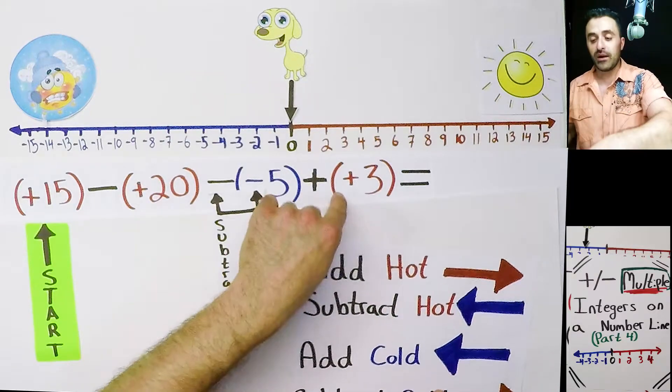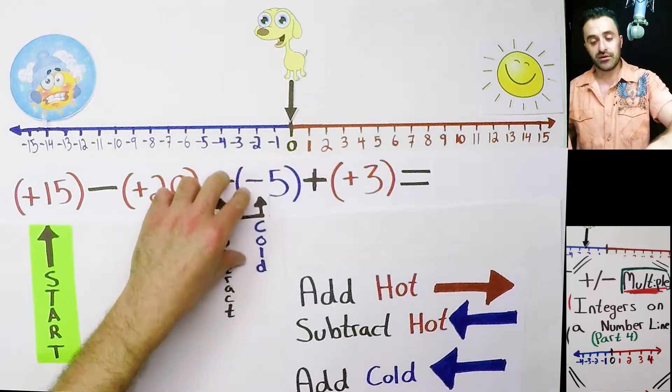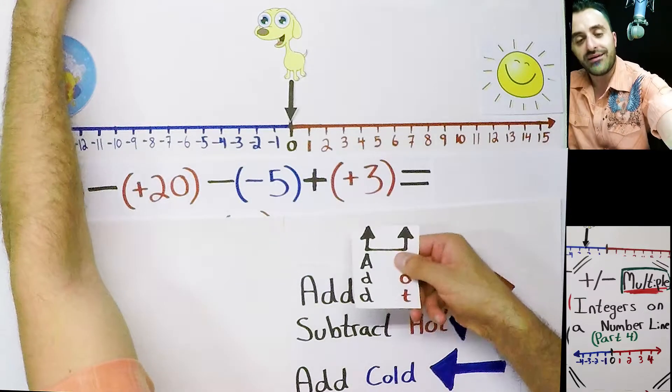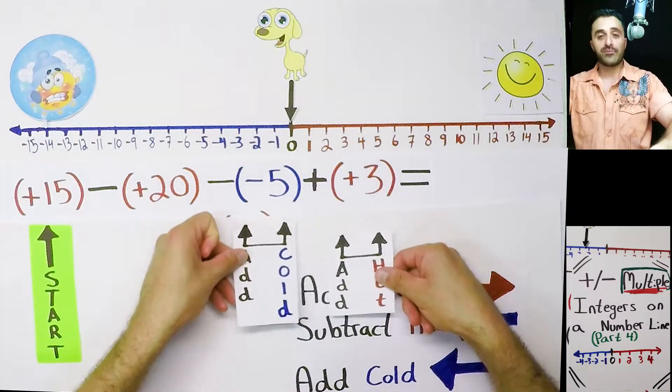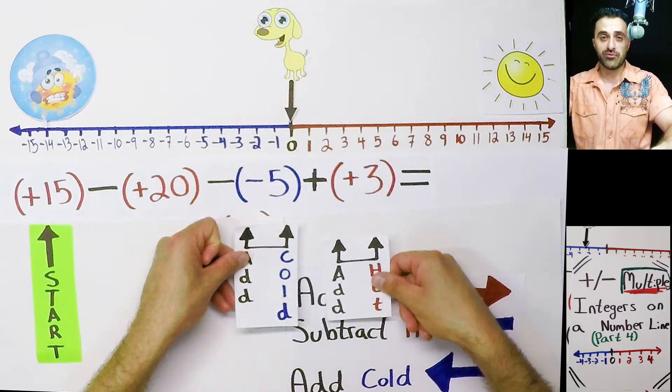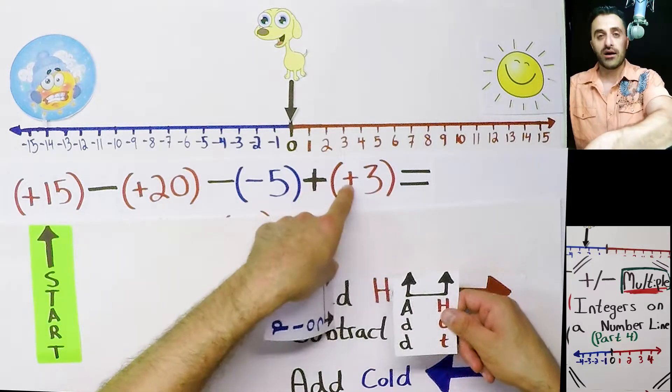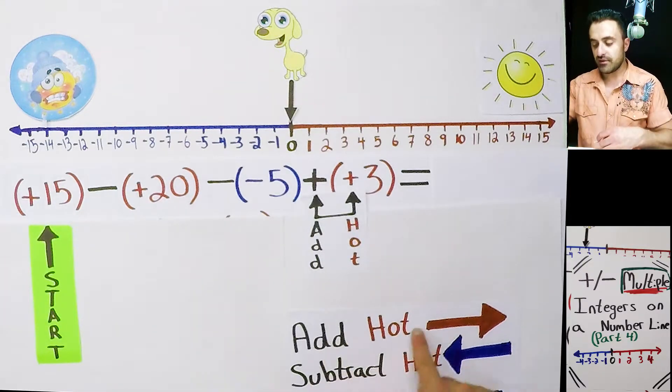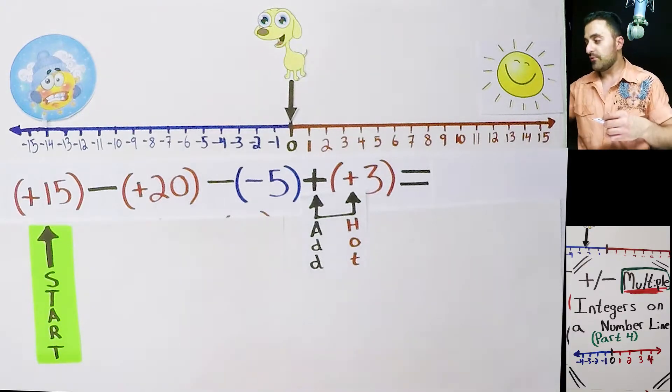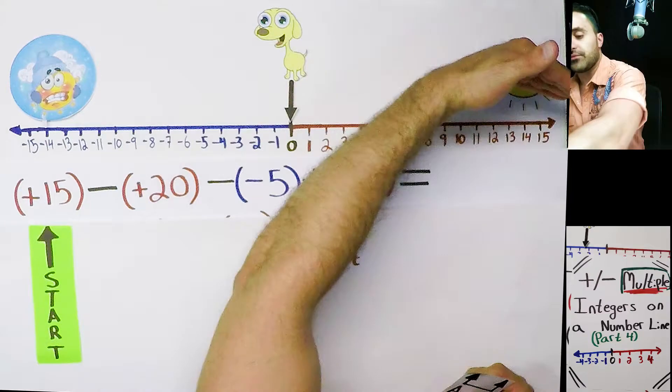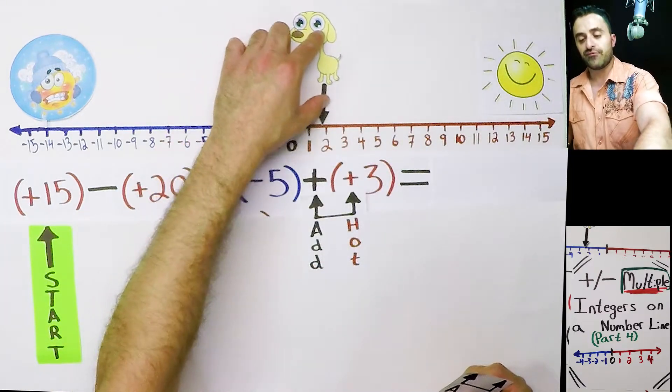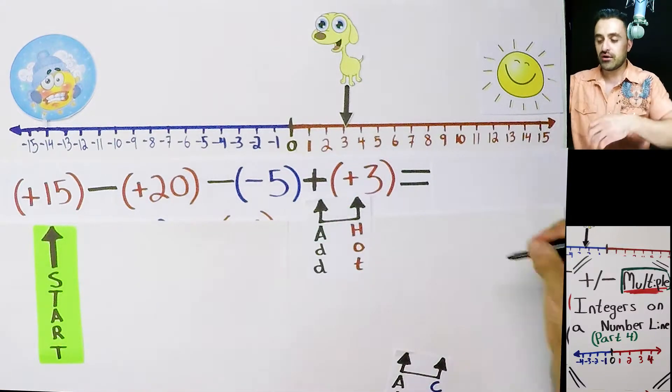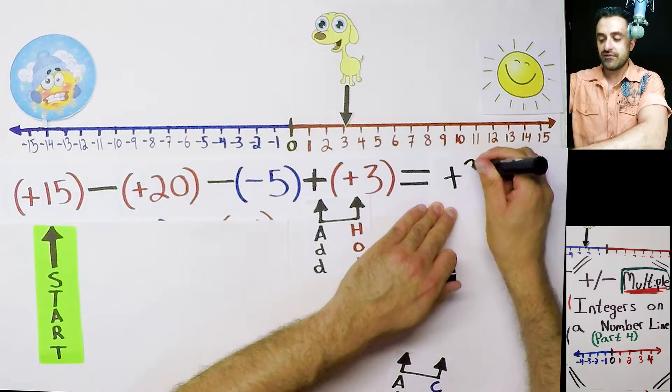Are we done? No we're not. We still have one more number to look at. It's an addition part of the equation. But what are we adding? Are we adding hot or are we adding cold? We are adding hot, so we'll use this symbol. When we add hot, things will get hotter. We're going to move in the hotter direction. Three spots. Three is our answer. There's no more numbers to look at, so we put in our final answer as positive three.